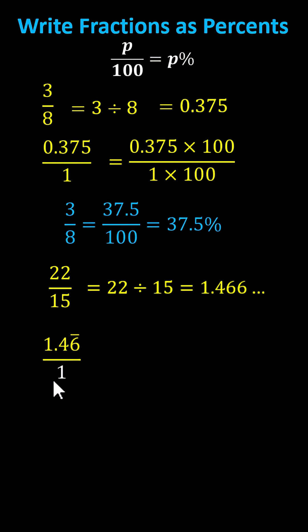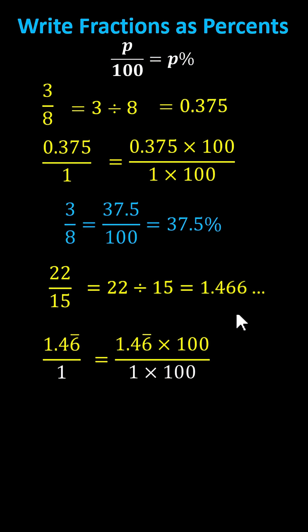And now to write this as an equivalent fraction with a denominator of 100, again, we multiply the numerator and denominator by 100. 1.46 repeating times 100 is equal to 146.6 repeating, and 1 times 100 is 100, indicating 22 fifteenths equals 146.6 repeating percent.